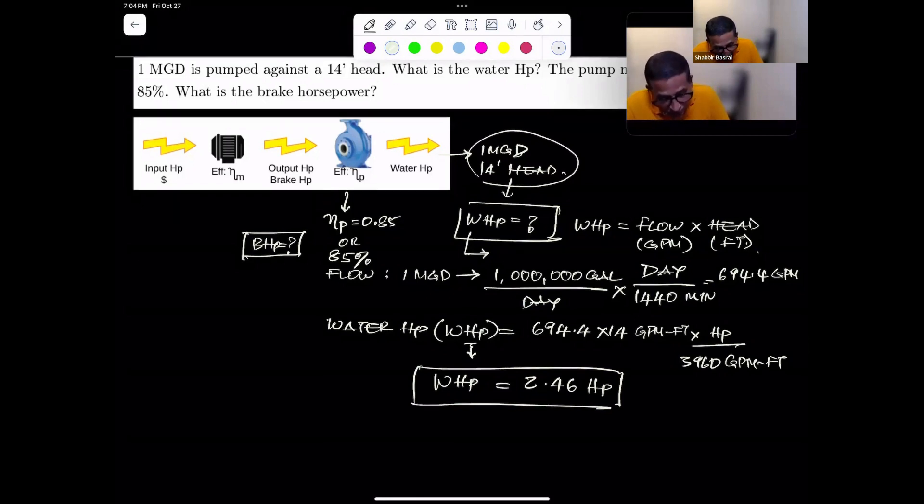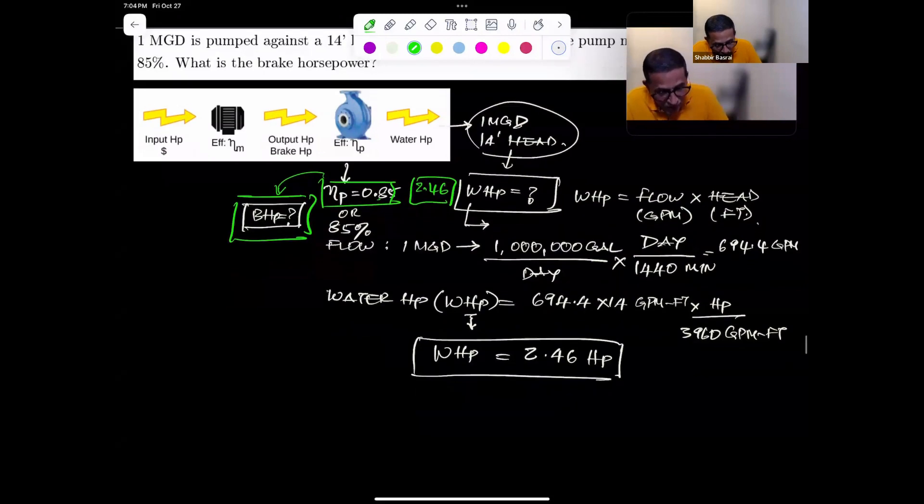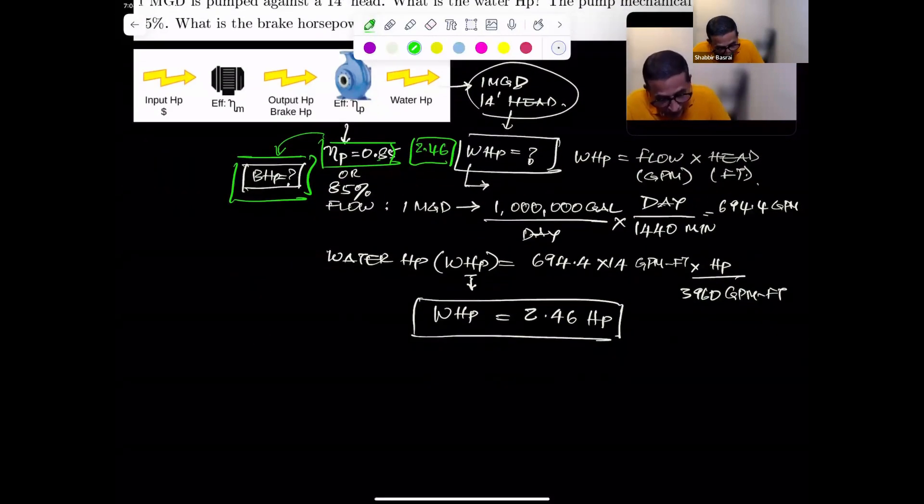Once we get the water horsepower, we know we got this water horsepower as 2.46, and we need to figure this one out. Using these two, we can find this out. We know my pump efficiency is water horsepower divided by the output horsepower or brake horsepower. So my brake horsepower is equal to water horsepower divided by the pump efficiency.